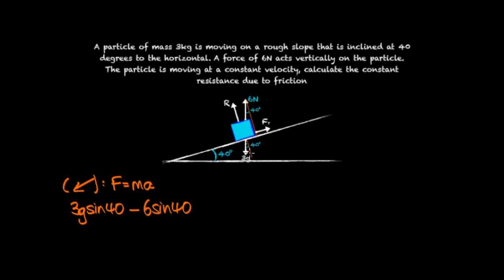As well as the force of friction going up the slope. And that's equal to MA. We know the mass is 3 kilograms and we also know the acceleration is zero because we have a constant velocity.